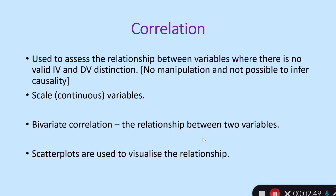Starting with correlation: frequently we want to assess the relationship and effect size between variables where there's no specific distinction between an independent variable and a dependent variable. We're not manipulating an independent variable to see what happens to the dependent variable; we're just looking at the relationship between a couple of variables — how they're related and how scores on one might change as scores on the other change. We also can't necessarily infer causality in these correlational designs.